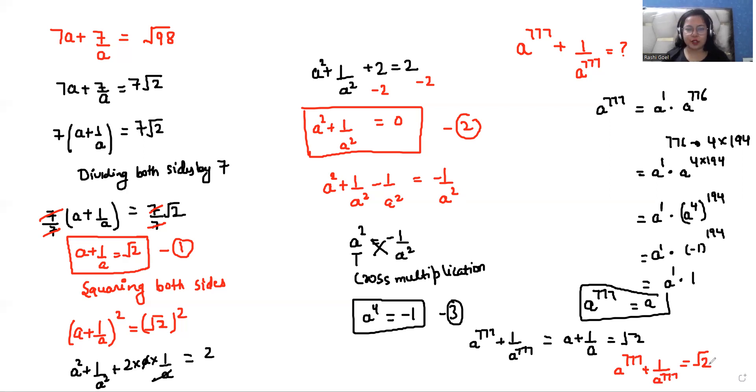So the value of a power 777 plus 1 over a power 777 is under root 2. I hope it's clear and easy to solve. If you find it useful, please give us a thumbs up and do share it with your friends and family. Thank you so much for watching this video.